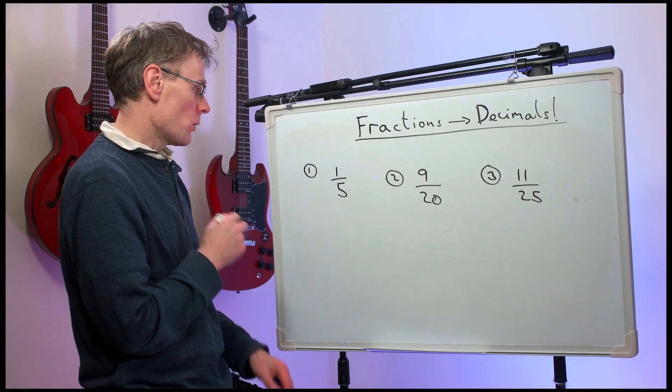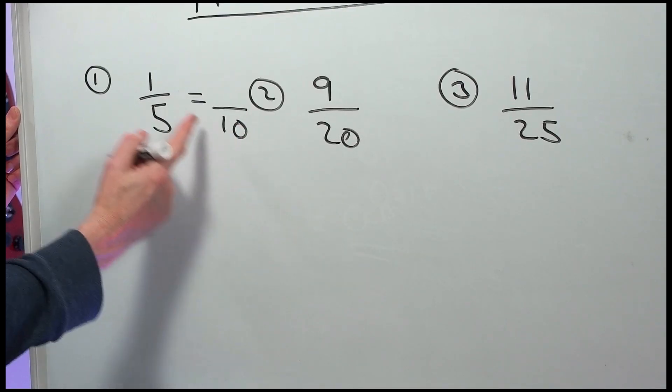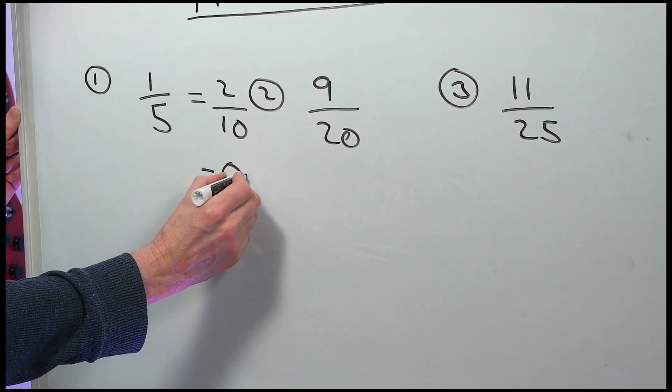Right, answers number one. One-fifth is the same as something out of ten. We times that by two, so we times the top by two. Two-tenths is 0.2.